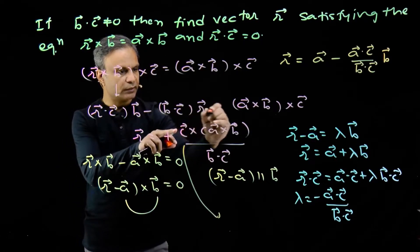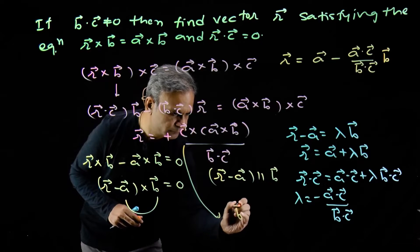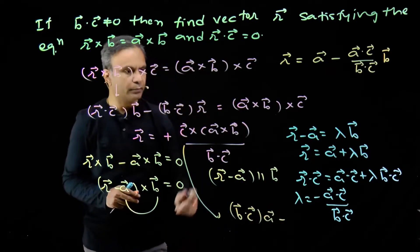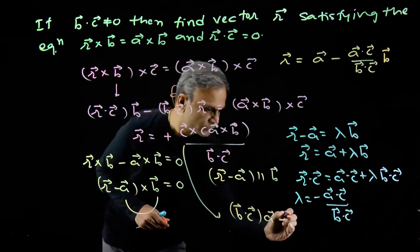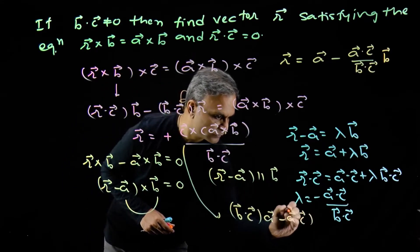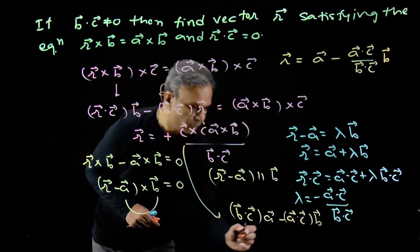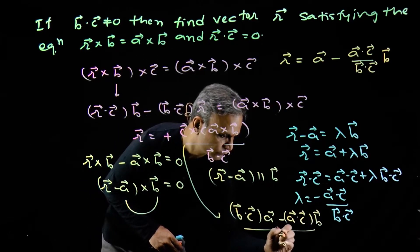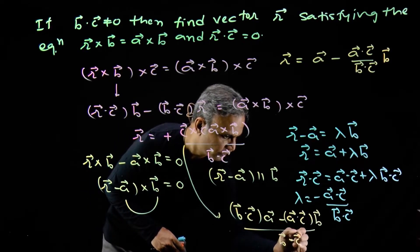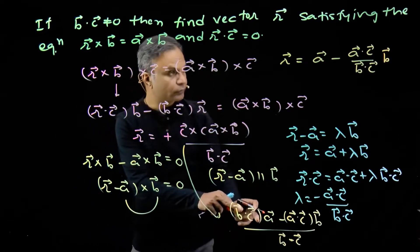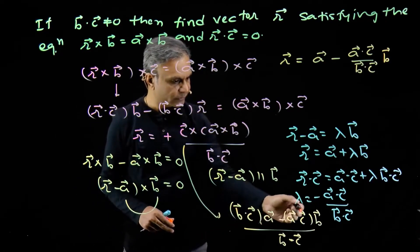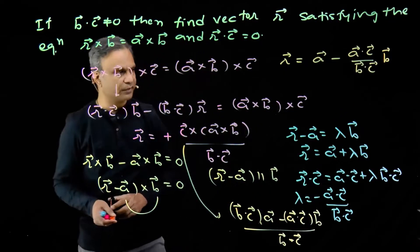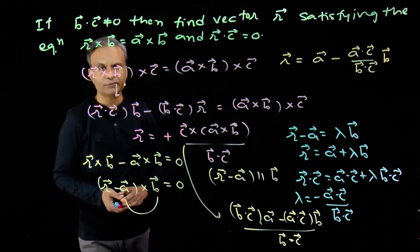Simplifying this expression, we get b dot c times vector a minus a dot c times vector b, all over b dot c. This is the same result as obtained by the first method — vector r expressed in terms of vectors a, b and c.